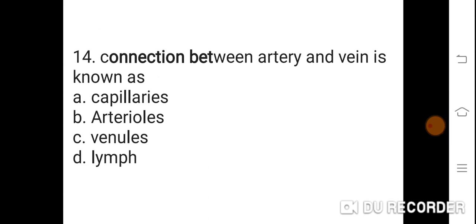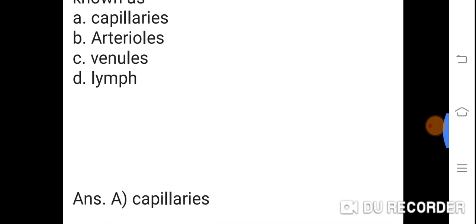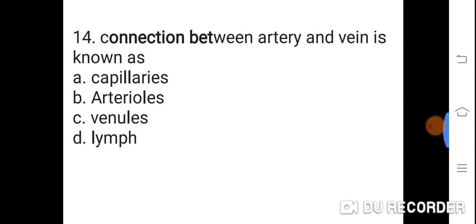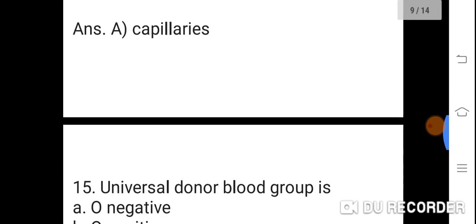Question 14: The connection between artery and vein is known as? Option A: Capillary. B: Arteriole. C: Venules. D: Lymph. Correct answer is A. Capillary. The connection between artery and vein is known as capillary.